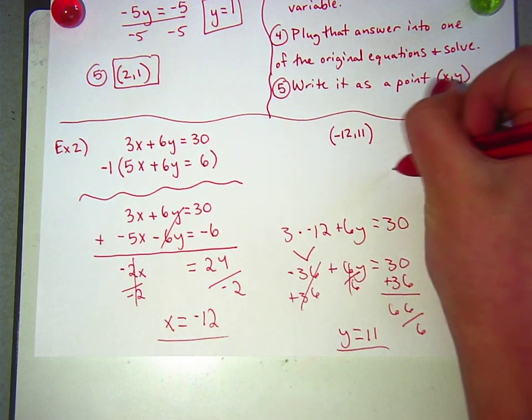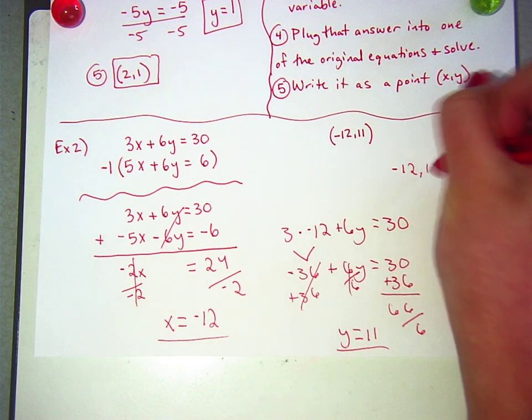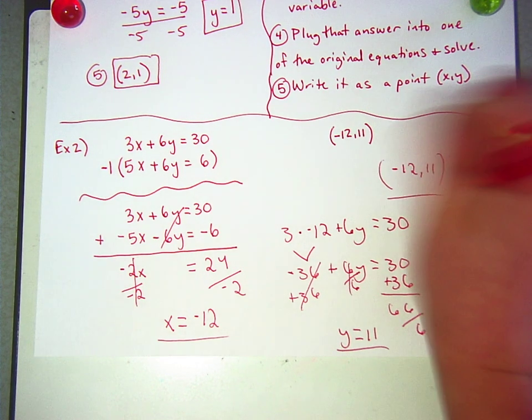And that's y equals 11. And then finally, if you put it in the points, it ends up being negative 12 comma 11.